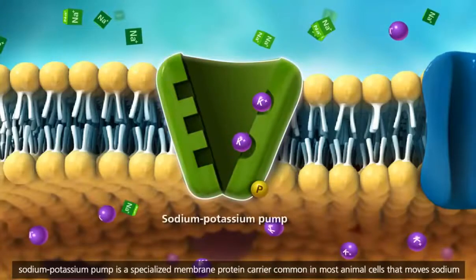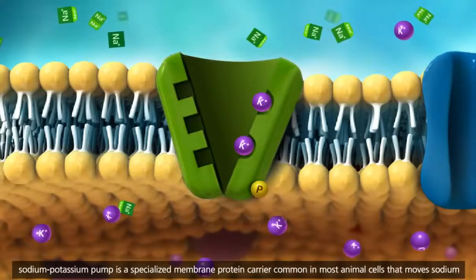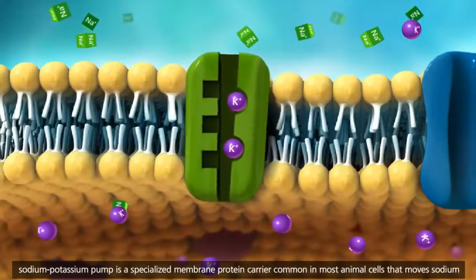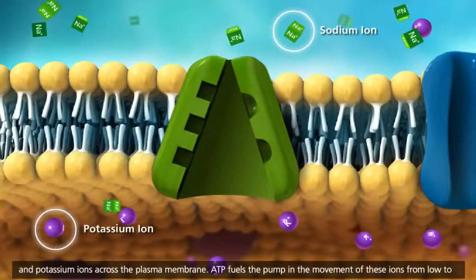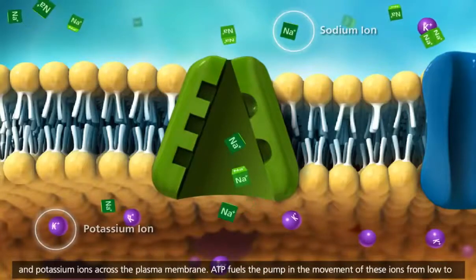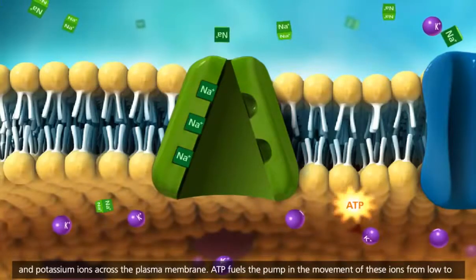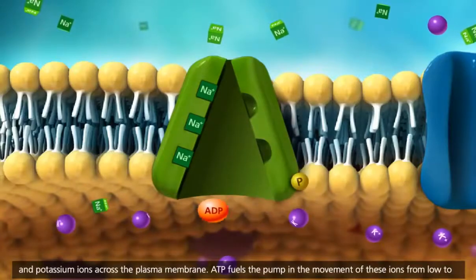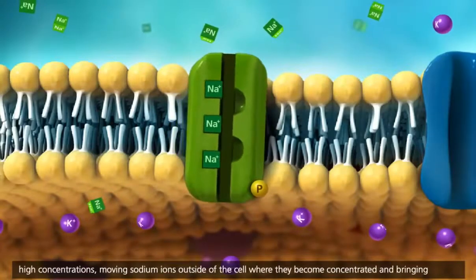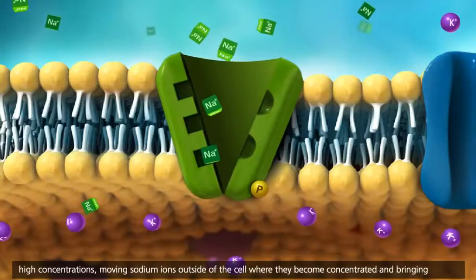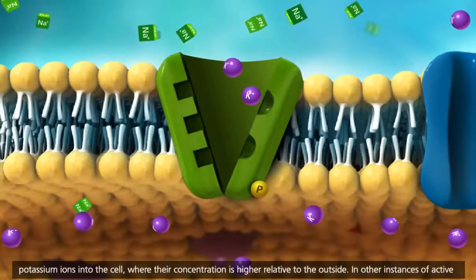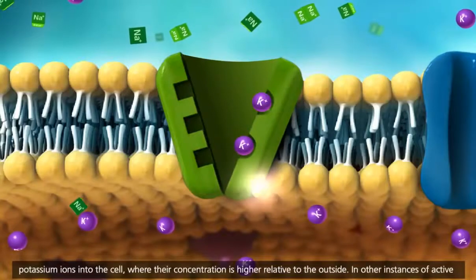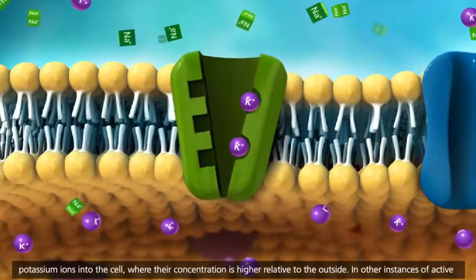The sodium-potassium pump is a specialized membrane protein carrier, common in most animal cells, that moves sodium and potassium ions across the plasma membrane. ATP fuels the pump in the movement of these ions from low to high concentrations, moving sodium ions outside of the cell, where they become concentrated, and bringing potassium ions into the cell, where their concentration is higher relative to the outside.